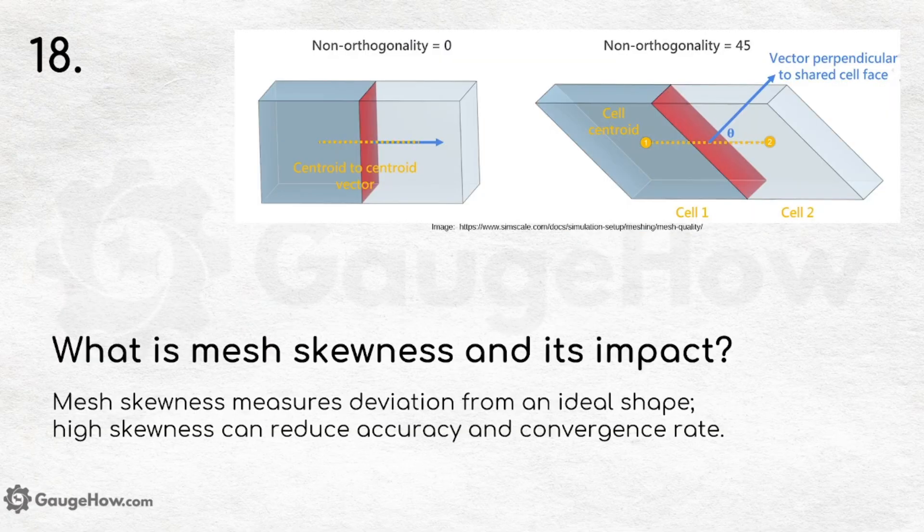What is mesh skewness and its impact? Mesh skewness measures deviation from an ideal shape. High skewness can reduce accuracy and convergence rate.